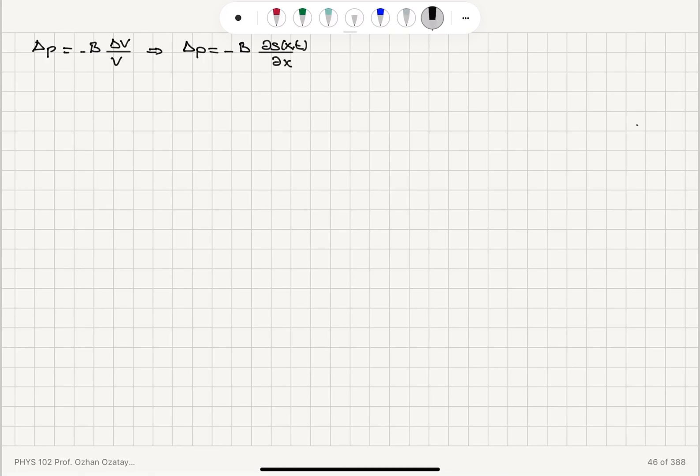So this gives us the relationship between displacement and pressure amplitudes as B k delta S max is equal to the pressure amplitude. And here we can see that the cosine turns into sine.